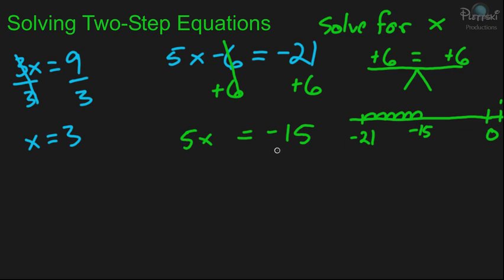Okay. So, now we need to take care of this, the 5x term there. And the way we do that, right now what's going on is it's saying 5 times x. So, we have to do the opposite operation. So, the opposite of multiplication is division. So, we need to divide by 5.